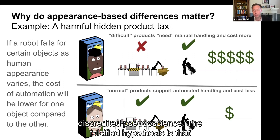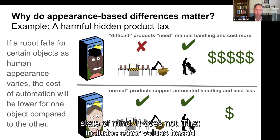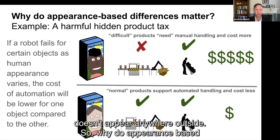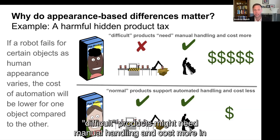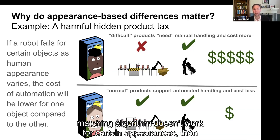Why do appearance-based differences matter? An example is a hidden product tax. Difficult products might need manual handling and cost more in a factory or warehouse setting because the text-image matching algorithm doesn't work for certain appearances, while normal products support automated handling and cost less. If a robot fails for certain objects as human appearance varies, the cost of automation will be lower for one group compared to the other — thus, a harmful hidden product tax.